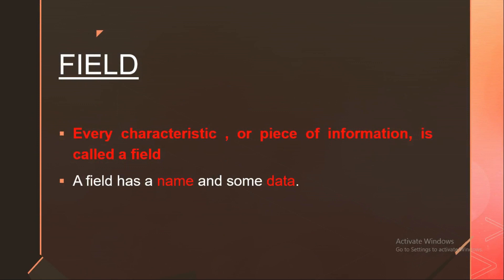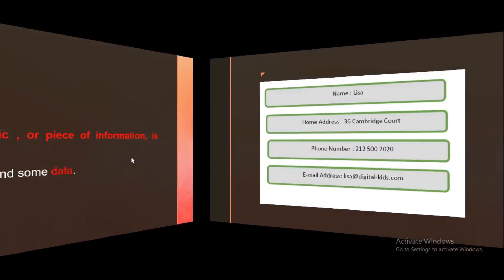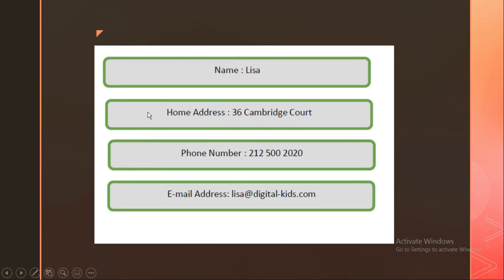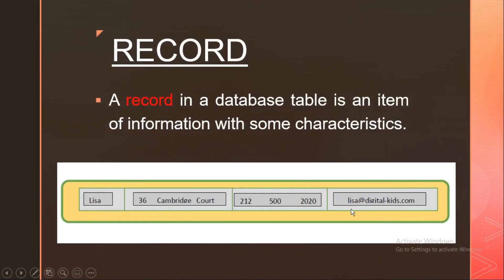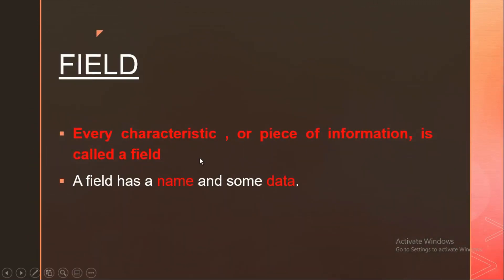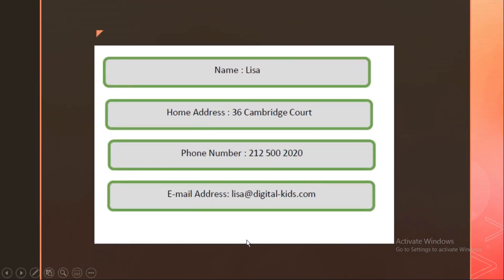Now we have the concept of field. Every characteristic or piece of information is called a field. A field has a name and some data. In the address book database, each record has four fields. The first field is name, the second field is home address, the third is phone number, and the fourth is email address. Each and every record has four fields. So that is what is meant by a field — every characteristic or piece of information is called a field. I hope you understood the difference between database, record, and field.